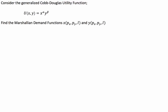G'day guys, we've got a microeconomics question today where we've been asked to consider the generalised Cobb-Douglas utility function for goods X and Y. From that utility function we're asked to find the Marshallian demand functions for both good X and good Y.